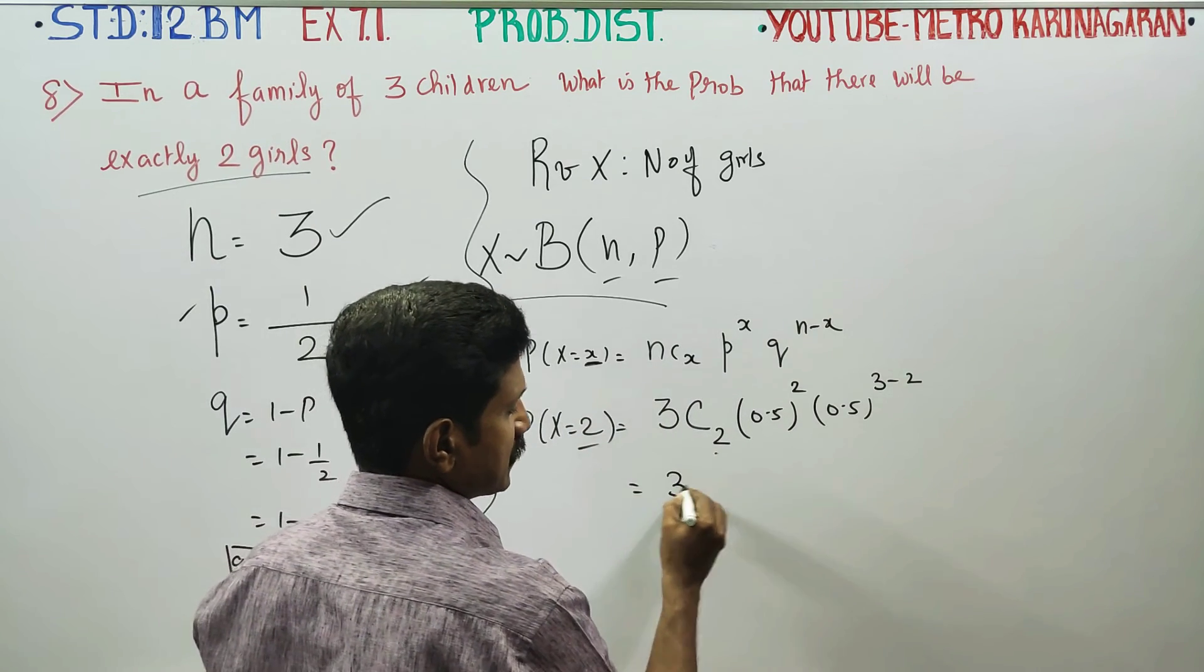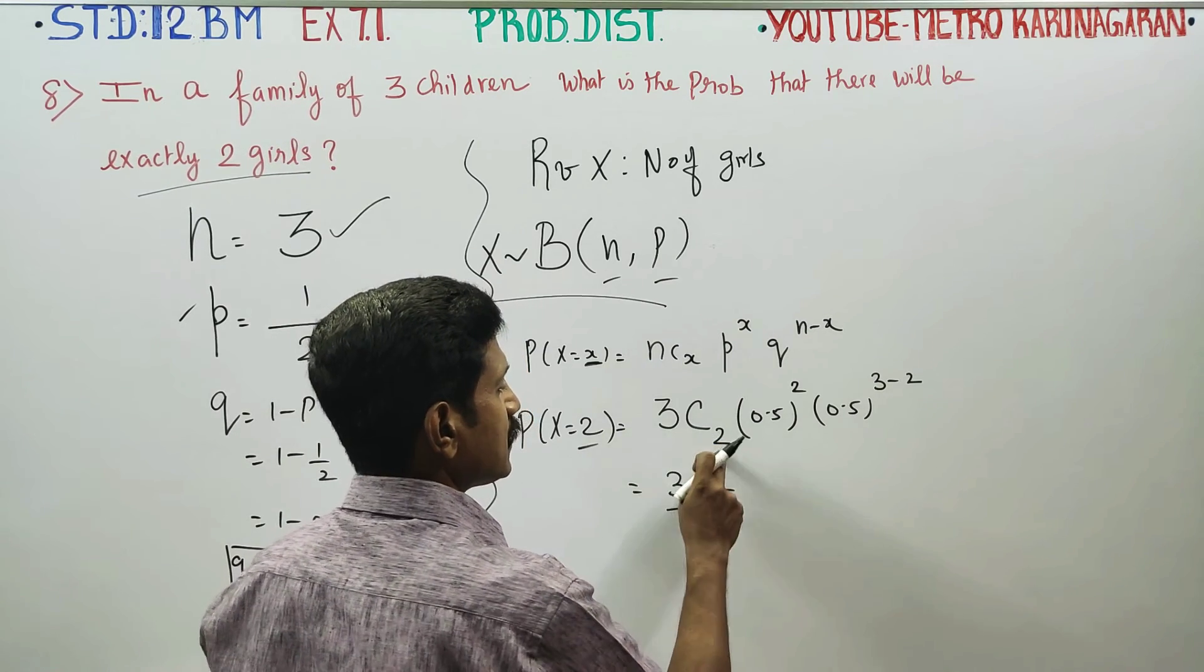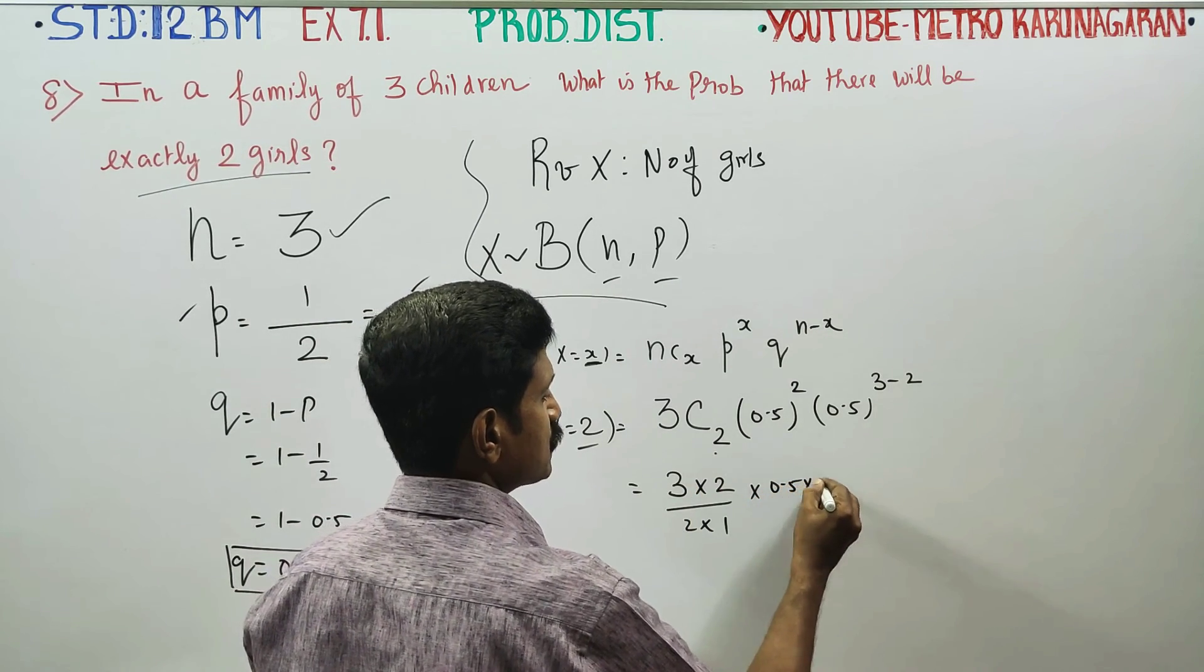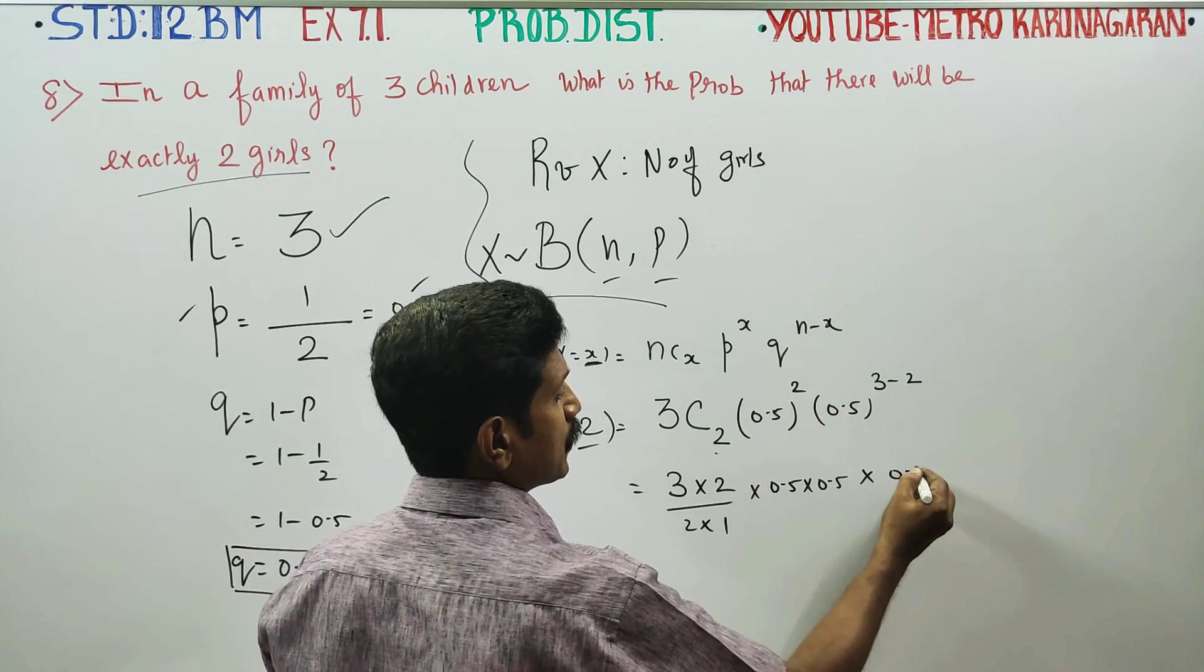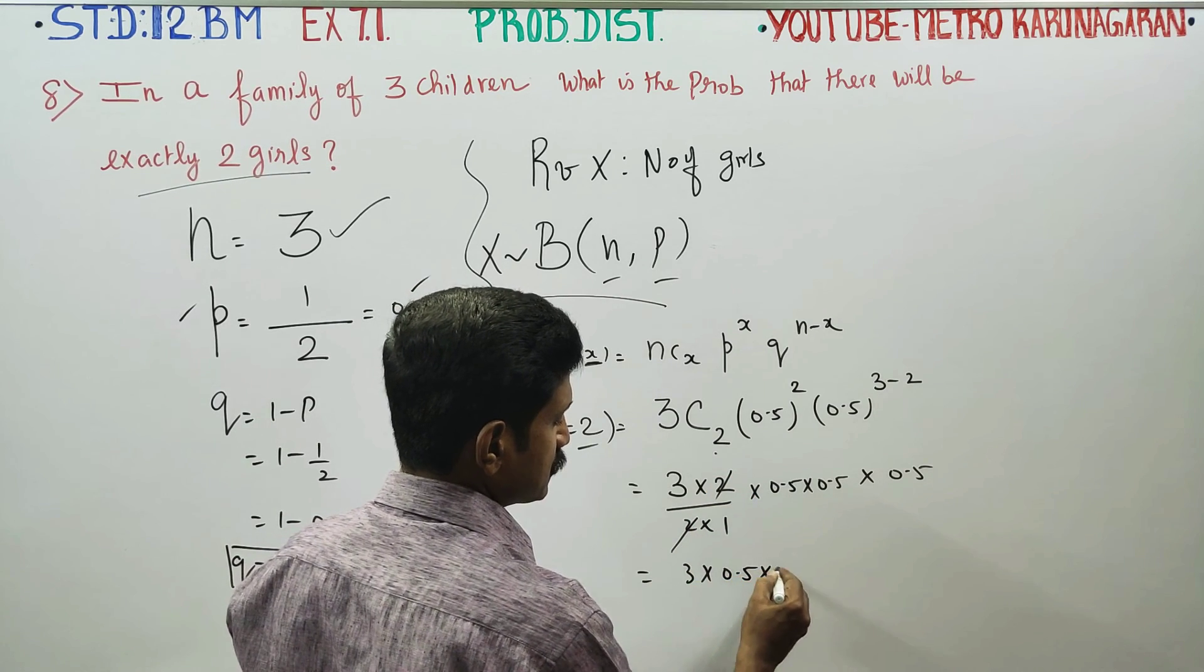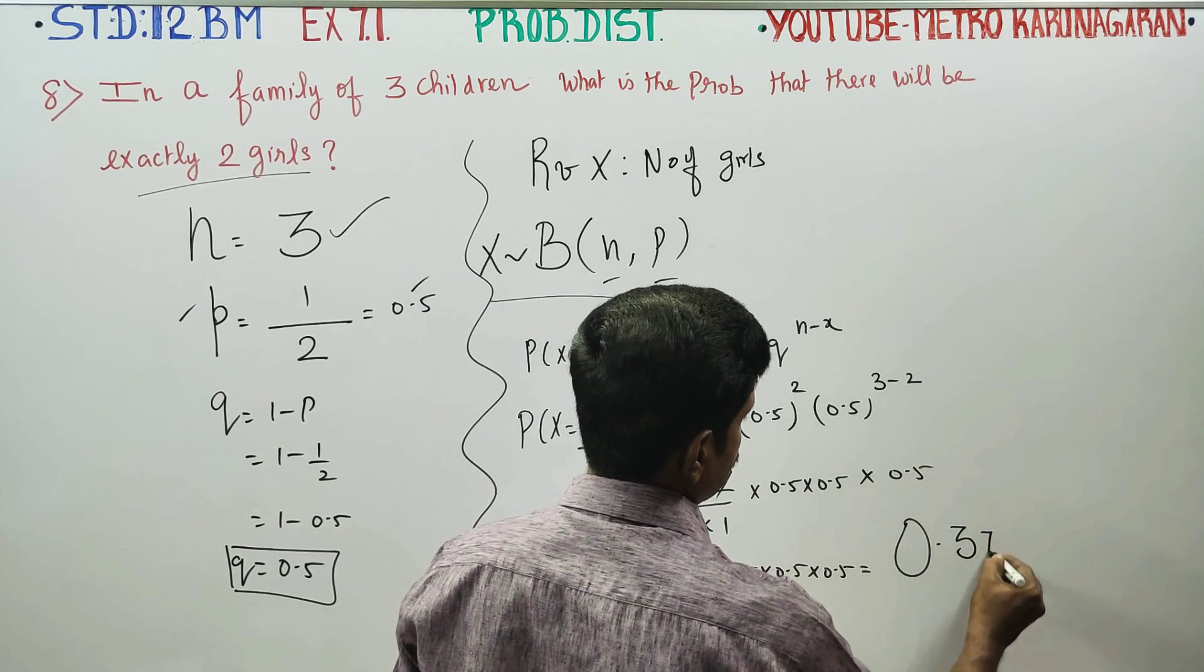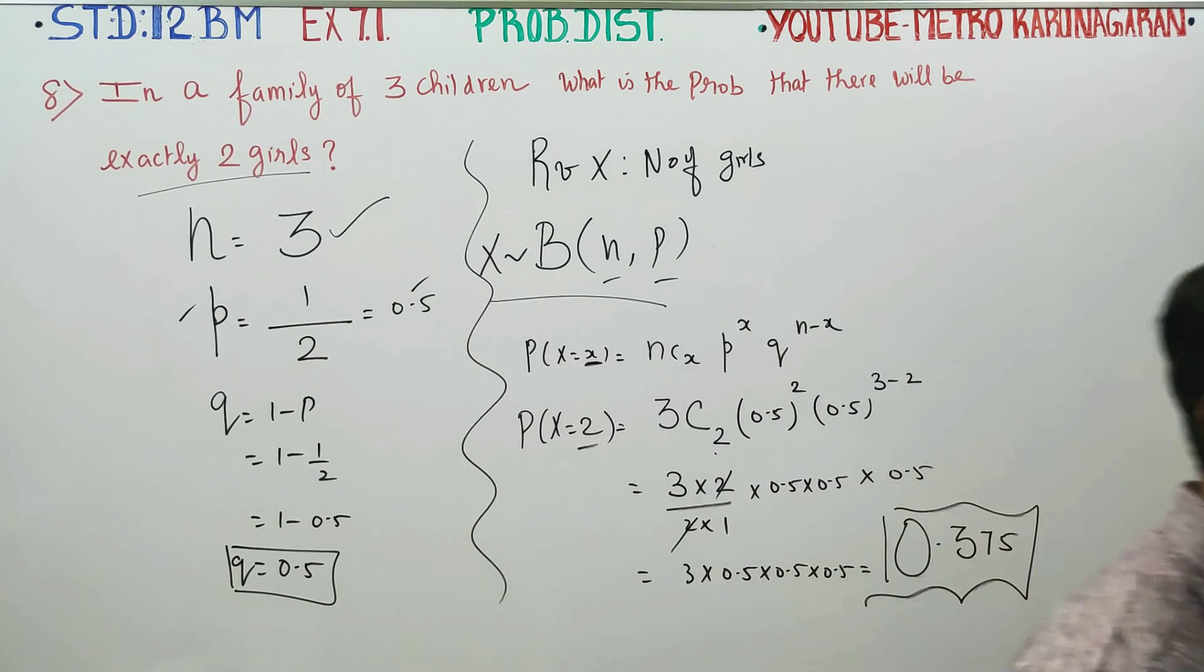3C2 can be written as 3 into 2 descending order by 2 factorial, 2 into 1, 2 factorial. 0.5 into 0.5 into 0.5. 3 into 0.5 into 0.5 into 0.5. Your answer will be 0.375, the exact answer for this sum.